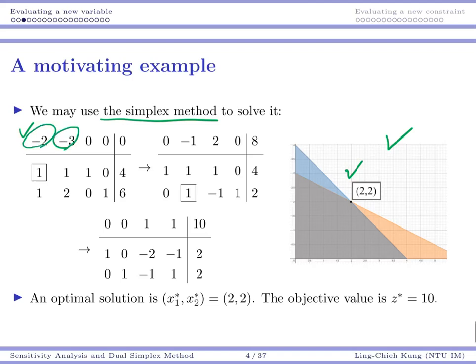We prepare the initial tableau: 2 and 3 become -2 and -3, and then all other numbers are copied. We do pivoting. Suppose we do the smallest index rule; we try to enter x1. We're going to do the ratio test. Four is smaller than six, so we do one pivoting, or one iteration. Then we get another negative reduced cost. We have our entering column and do the ratio test again. x2 should be our entering variable, so we do it again and get our final tableau.